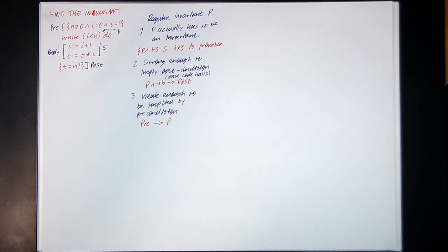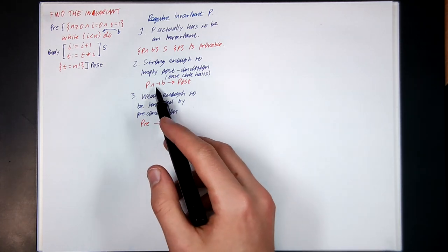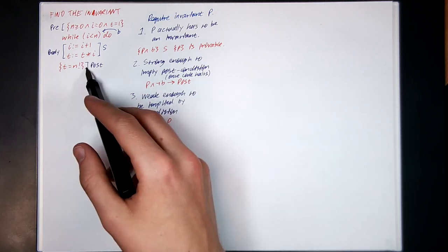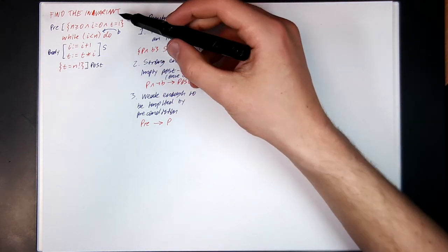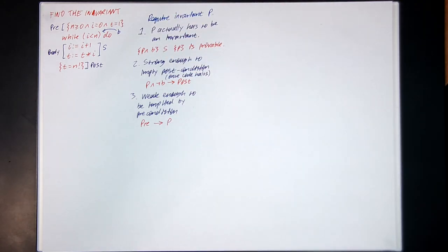The second thing you require is that once the code halts, P needs to be strong enough to imply the postcondition. That is, P and not B together both imply the postcondition. And the third condition we require is that P is weak enough to be implied by the precondition — assuming the precondition should be able to prove P.